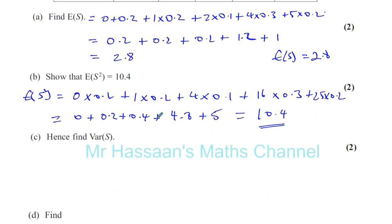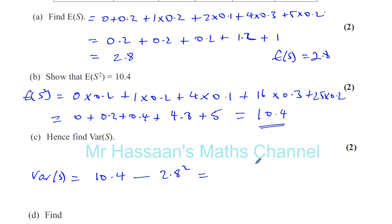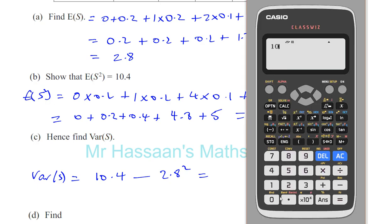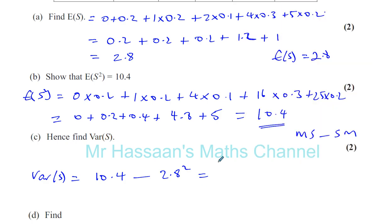Hence, find the variance of S — Var(S). That's going to be the mean of the squares minus the square of the mean. The mean of the squares is 10.4, and the mean is 2.8, so the square of the mean is 2.8 squared. So you have 10.4 minus 2.8 squared, which gives you 64 over 25, which is 2.56.